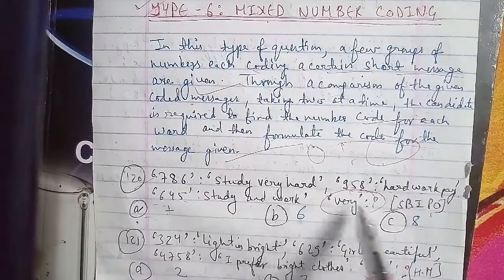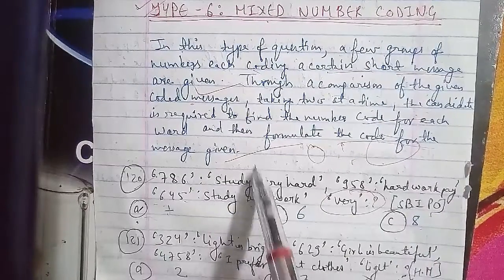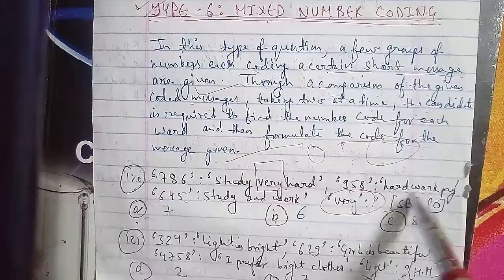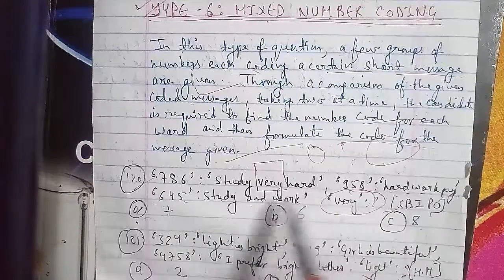Let's see. First we find 7. Study coding, then hard coding, and then we find very. Look at study here.